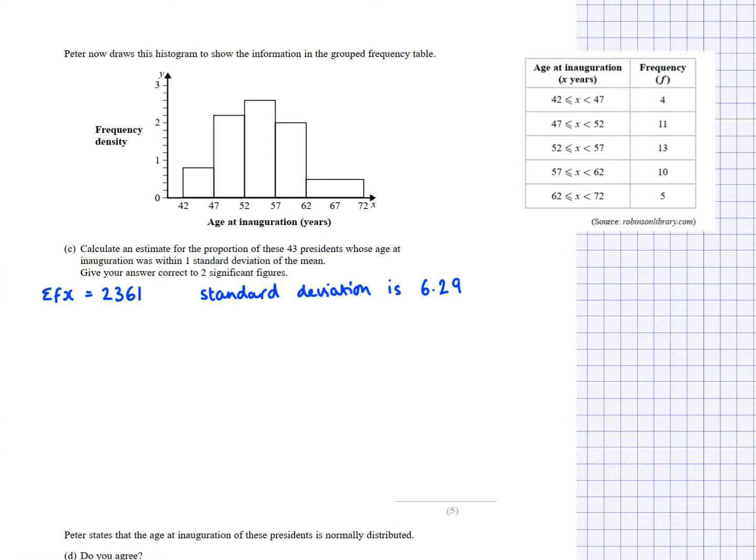So here is question 13c. Now I've brought this table here because this is going to help us as well. Now I want to show you how the histogram and the table compare in terms of how we do this question. So now we have Peter now draws this histogram to show the information in the grouped frequency table. So this was the table. Calculate an estimate for the proportion of these 43 presidents whose age at inauguration was within one standard deviation of the mean. And give your answer correct to two significant figures. So we mentioned mean here. We mentioned standard deviation. And when we say within one standard deviation of the mean, we are looking at the mean take away one standard deviation to go on the left side and mean add one standard deviation to go on the right side and think about how many people there are there in proportion to the 43. So let's see how we're going to think about this.